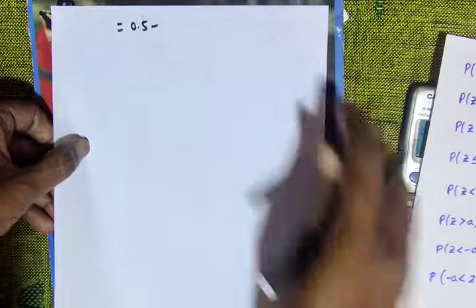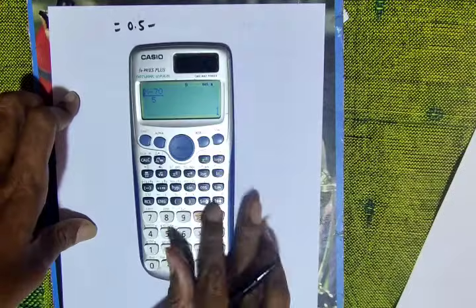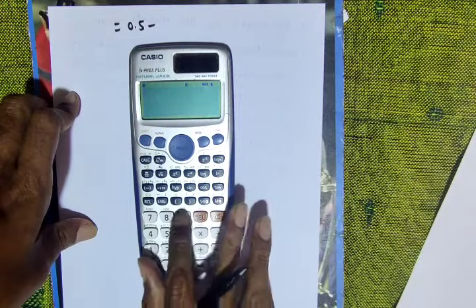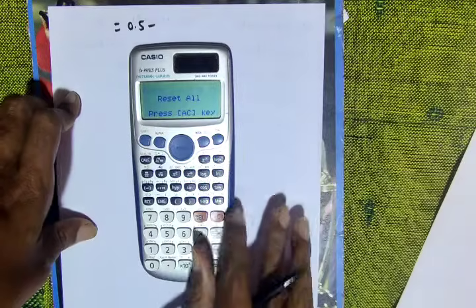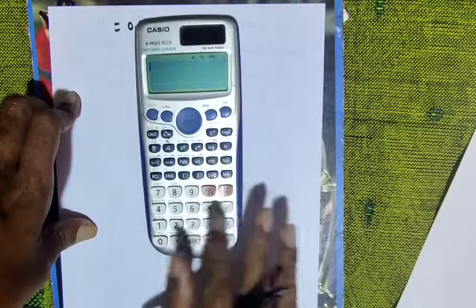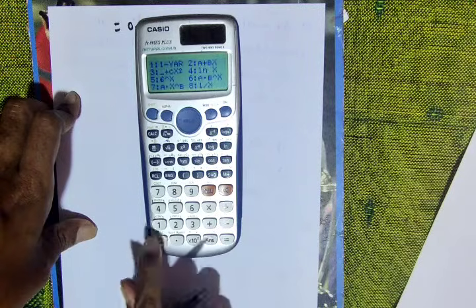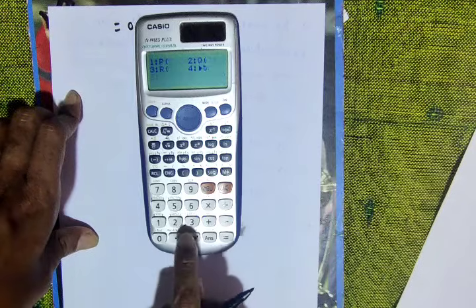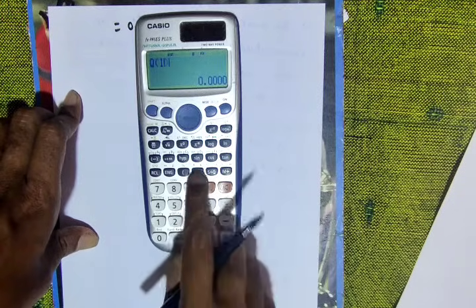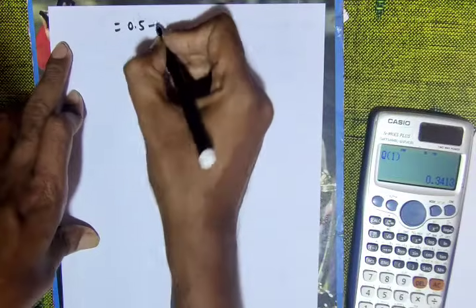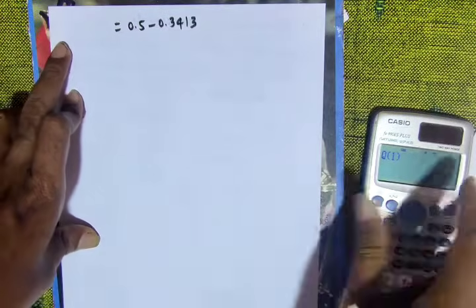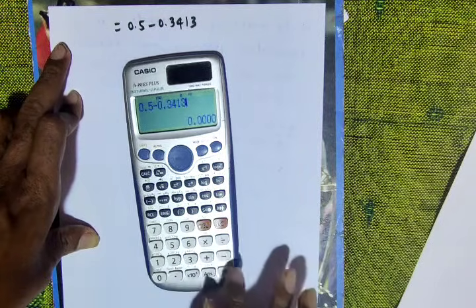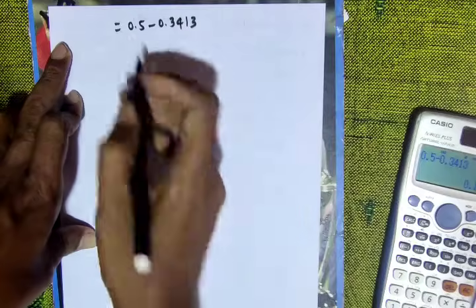From the distribution table, phi of 1 equals 0.3413. Therefore, 0.5 minus 0.3413 equals 0.1587.